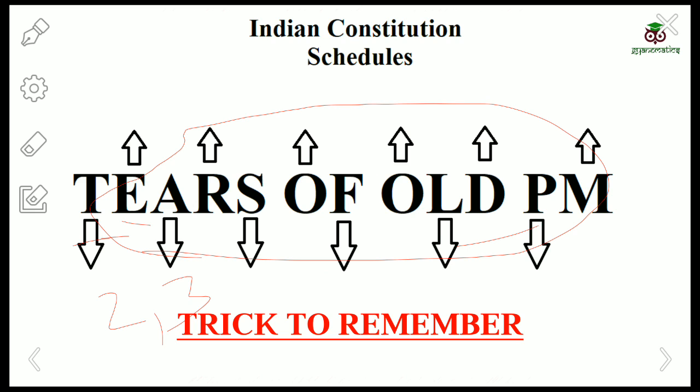The fourth schedule — R will stand for Rajya Sabha. Rajya Sabha constituencies, their related provisions, and anything related comes under your fourth schedule. The fifth schedule will talk about Scheduled Areas and Scheduled Tribes. S will stand for Scheduled Areas and Scheduled Tribes.